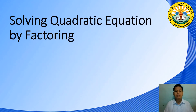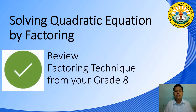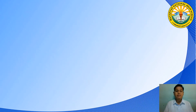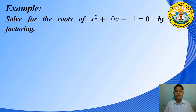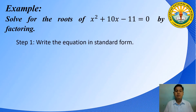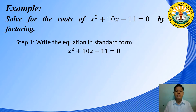The second method is solving quadratic equations by factoring. In this method, you must review first the factoring techniques taught to you by your grade 8 teacher. Let's have an example. Solve for the roots of x squared plus 10x minus 11 is equal to 0 by factoring. Step 1: write the equation in standard form. In this case, the given equation is already written in standard form.